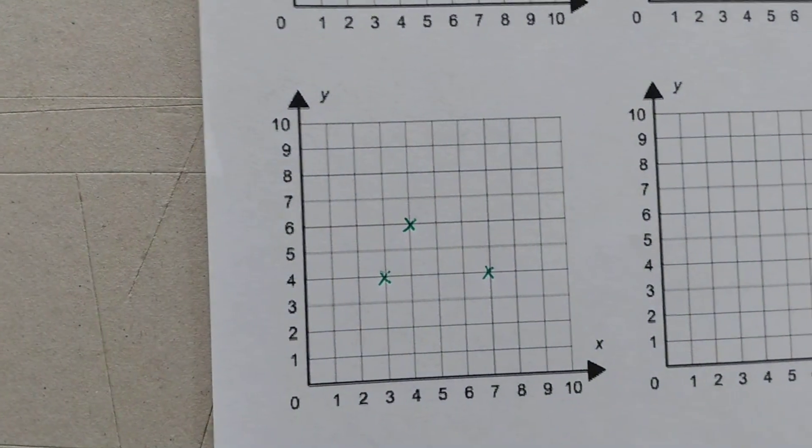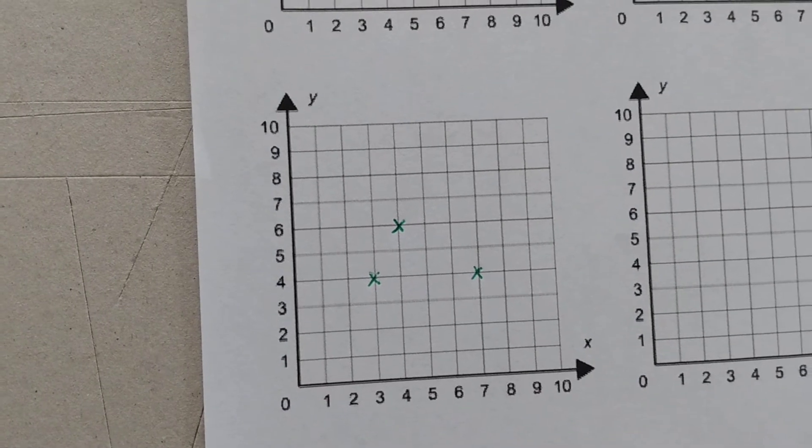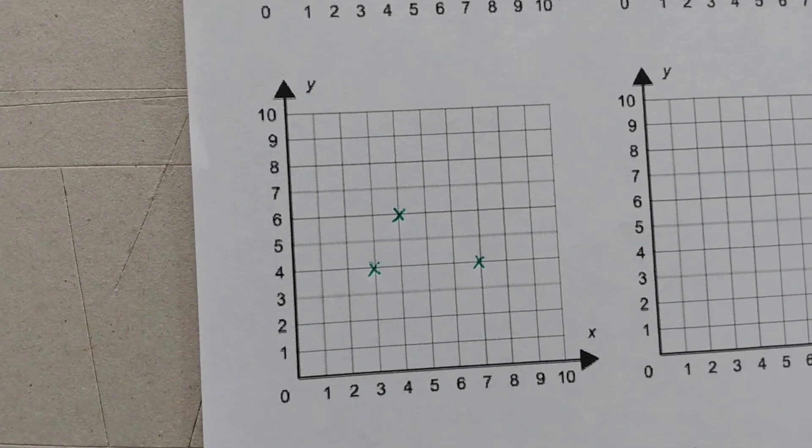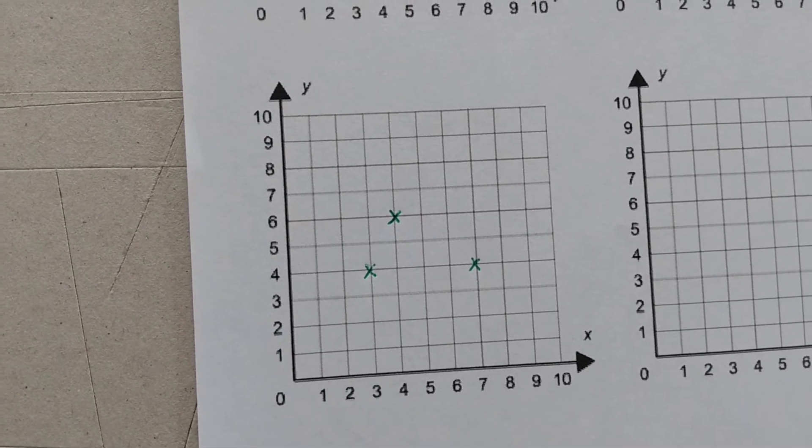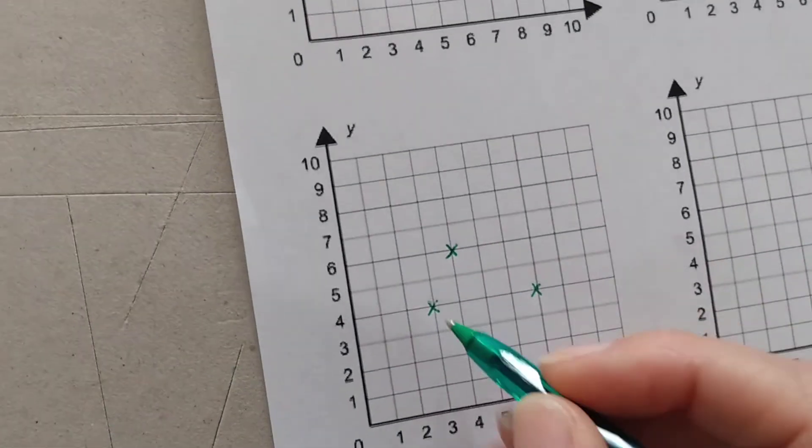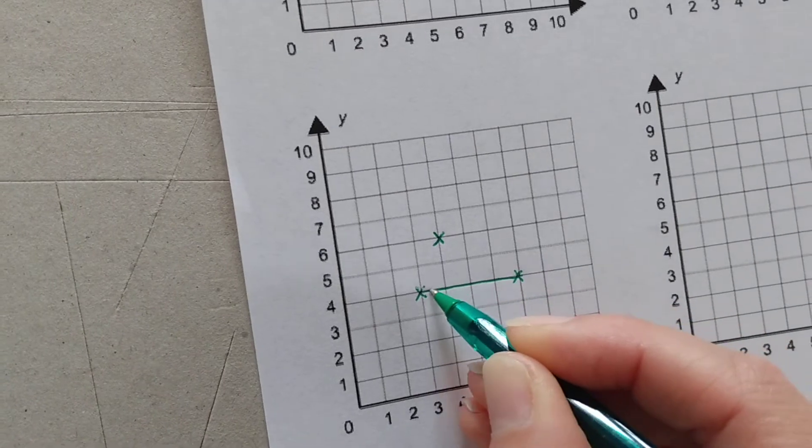But it's not like a rectangle. Because it has two obtuse angles and two acute angles. Hmm, interesting. Let me join the lines that I've got. See if that gives you any clues.